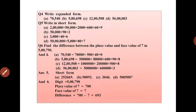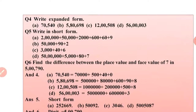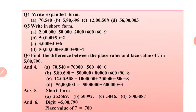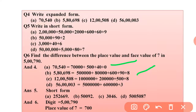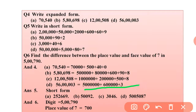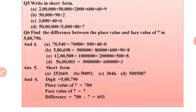Question 4: Write the expanded form. For 70540, the expanded form is 70,000 + 500 + 40 + 0. For 5 lakh 80,698, it is 5,00,000 + 80,000 + 600 + 90 + 8. Similarly for 12 lakh 500 and for 56,000,003, you can expand and write them in the same way.